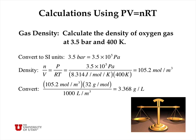Let's consider some examples. We can calculate the density of oxygen gas at 3.5 bars and 400 kelvins by converting bars into pascals, then plugging pascals, R, and T in kelvins into the ideal gas law. We get N over V equal to 105.2 moles per cubic meter. Converting to grams per liter by multiplying by 32 grams per mole — the molar mass of oxygen — and dividing by 1000 liters per cubic meter, we get 3.368 grams per liter.